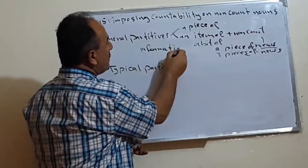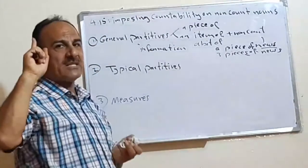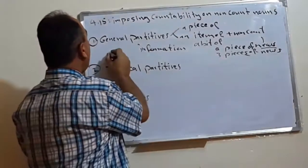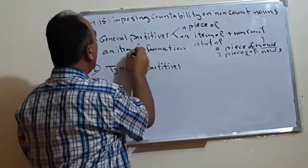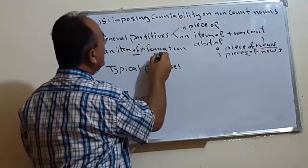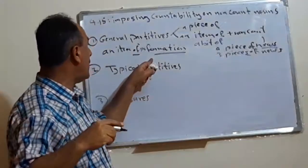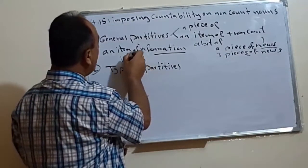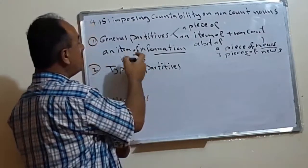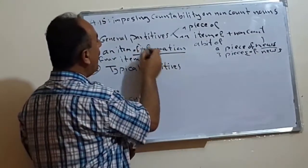Information is what is non-count now. If we want to tell others that we have just one, we say, an, for example, an item of what? Of information. Means just one. If we want to make it a plural, we say four items. Now we make the plural for what? For the word item. We say, for example, four items of what? Of information.